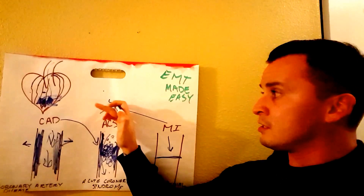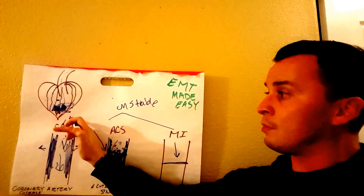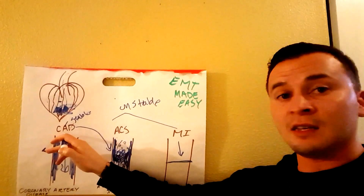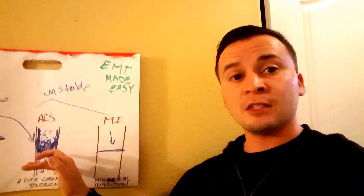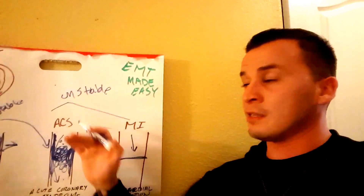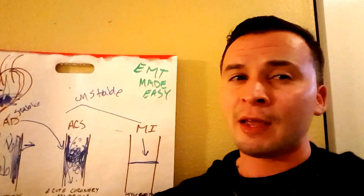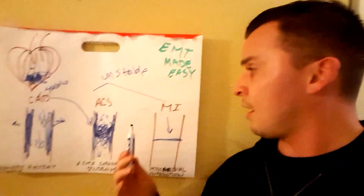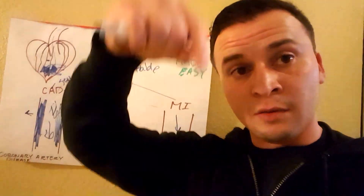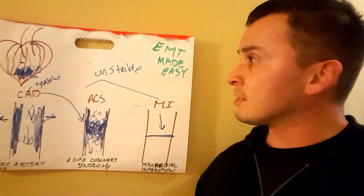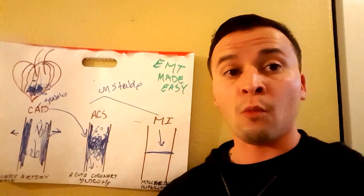To summarize: CAD causes stable angina — the pain goes away when the patient rests. ACS and MI both cause unstable angina — the pain persists no matter what. Angina is chest pain due to a lack of oxygen to the heart. For ACS and MI, your patient will need nitroglycerin and aspirin. If you have questions on how nitroglycerin or aspirin help ACS or MI, leave a comment below. That covers CAD, ACS, and MI — hope you learned something!